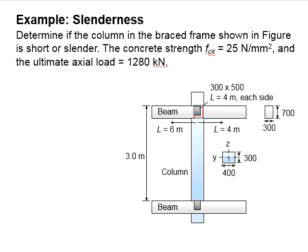There are incoming beams. The beam size is 300 times 500 and the beam length is 4 m on each side of the column. You are asked to go through a series of calculations to determine the effective height of the column and then to determine the slenderness ratio and check against the slenderness limit in order to determine whether the column is short or slender.